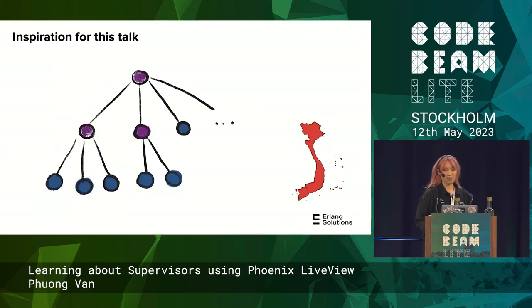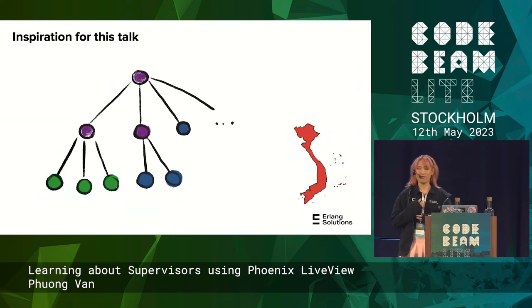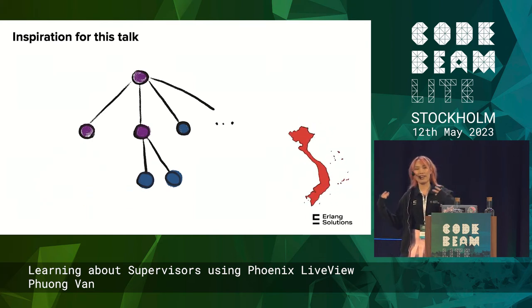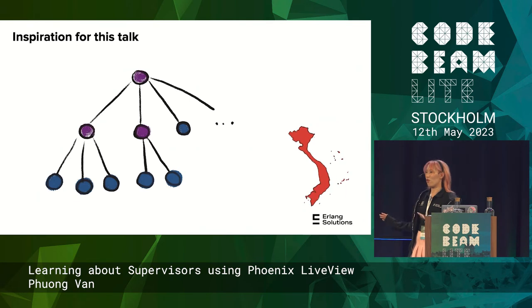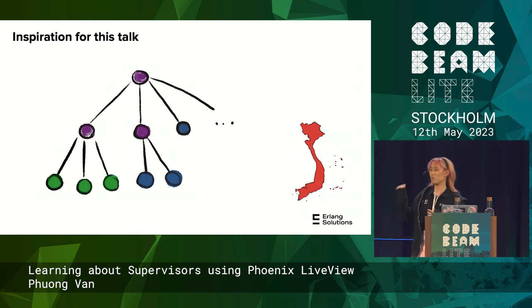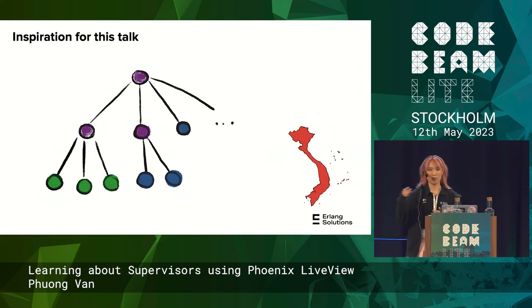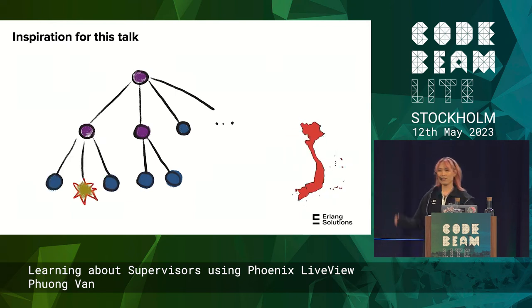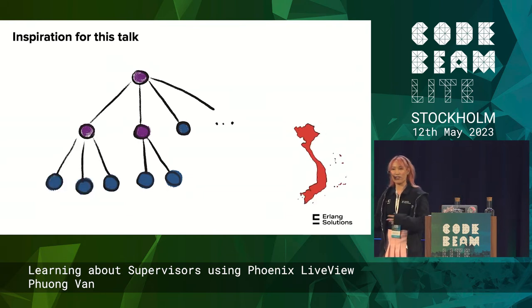The inspiration for this talk was at the beginning of this year, when I got a chance to give a talk in Ho Chi Minh City, Vietnam — kind of advertising Erlang, Elixir, and functional programming. I wanted to show them the power of supervisors: how a supervisor manages processes and restarts them with a strategy, so you don't have to crash the whole system. I was thinking: how do I visually show this to people who don't really know about Erlang and Elixir?